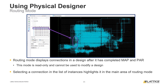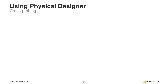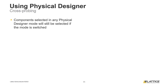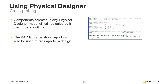Now that we've discussed Physical Designer's three modes, we are going to briefly discuss some of the other things it can be used for. A useful feature of Physical Designer is that it can be used to cross-probe a design. Users can cross-probe by selecting any signal, component, or site, and then switching the Physical Designer mode. The selected component will remain active in the new Physical Designer view, allowing users to easily observe parts of a design after it has been placed and routed. Another way users can cross-probe involves Radiant's generated reports. Once an implementation has completed place and route, a timing analysis report will be generated. In this timing report, users can observe the most critical paths in a design and view them in Physical Designer's placement or routing modes by selecting the corresponding icons.